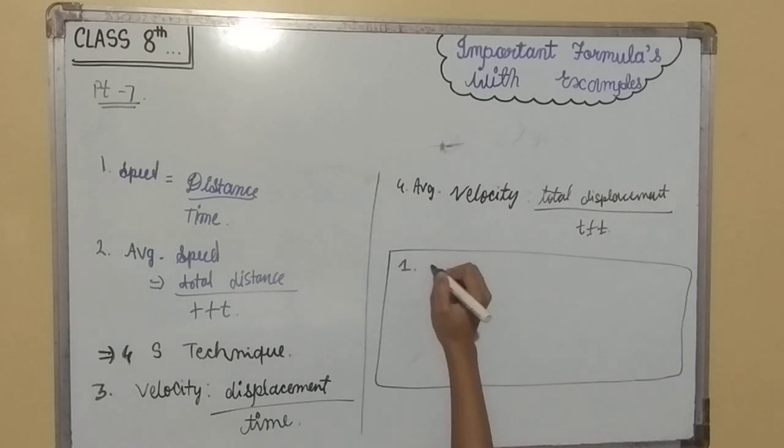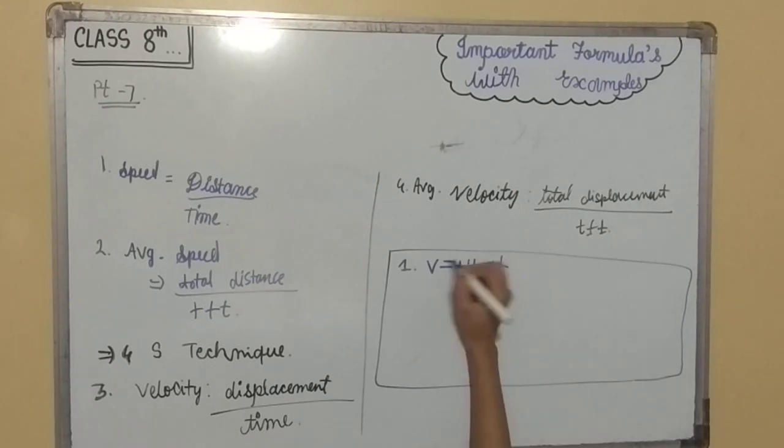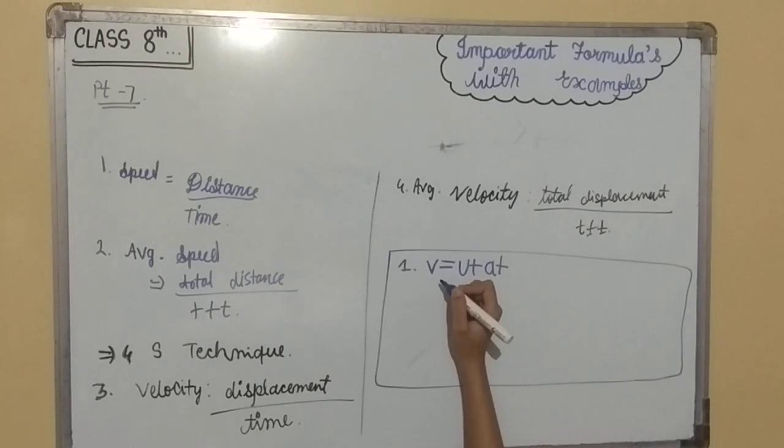First is V is equal to U plus at. This is velocity-time relation.